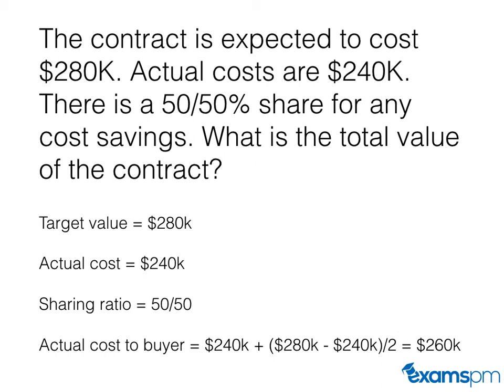The actual cost for the buyer is $240,000, plus the incentive paid to the seller — which is the difference between the target value and actual value times 0.5. So: $280,000 minus $240,000 equals $40,000, divided by two equals $20,000. Adding $20,000 to $240,000 gives the answer of $260,000.